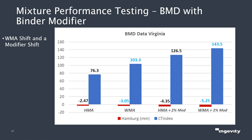Going back to the Virginia SMA project: modifiers and recycling aids were also evaluated. Using two percent modifier, you jump from 76 to 126 on IDEAL-CT with hot mix — a big shift. But you also go from 103 to 143 using the modifier with warm mix. There's a big step change with modifiers, and also a big step change with temperature reduction. Warm mix additives at low dosages provide high impact. These are different engineering tools to optimize our mixes — not just increasing binder content — to achieve better balanced mix design outcomes.